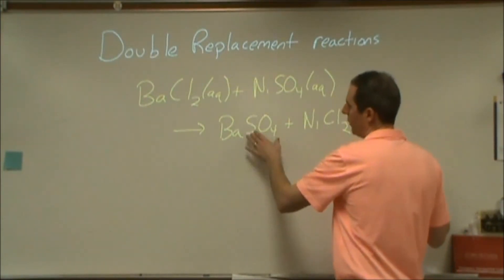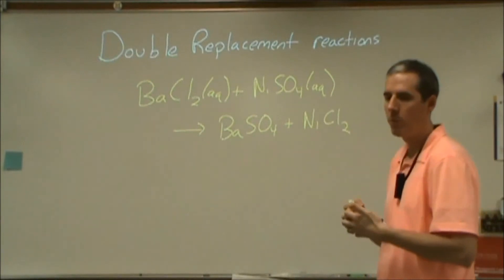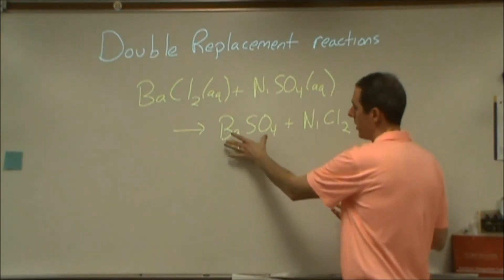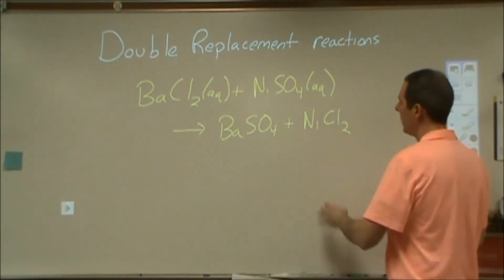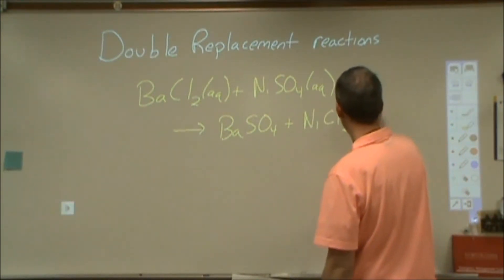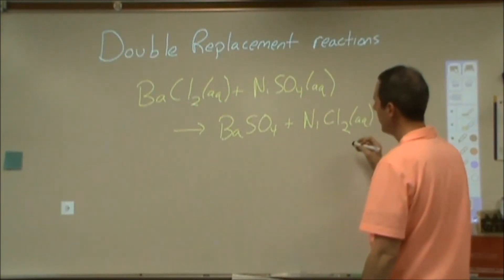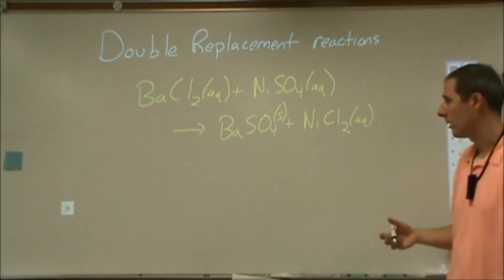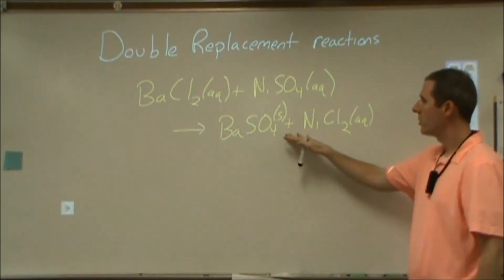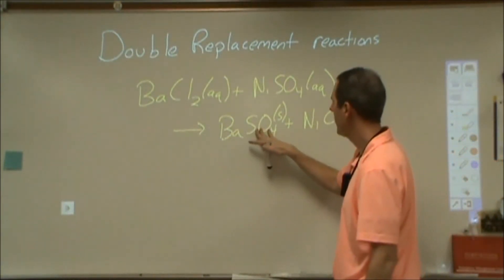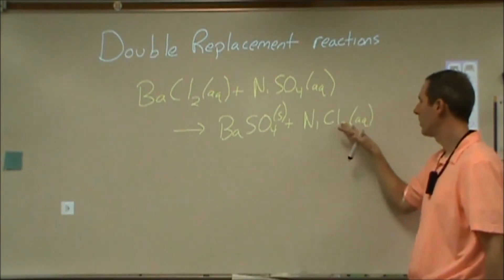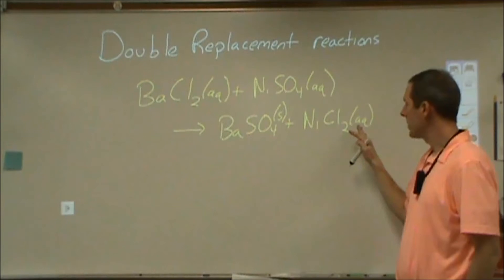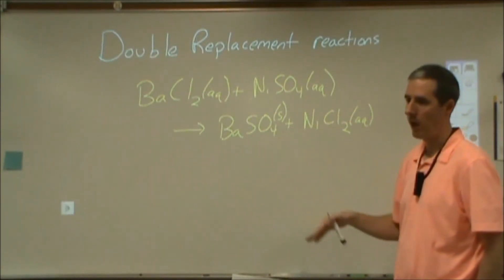But when I put the barium with the sulfate, those two form something that's not going to dissolve in water. It's called a precipitate, or basically it's a salt that doesn't dissolve in water. And then the nickel chloride will dissolve in water. So you're going to have some means to make a prediction about whether or not this will be soluble in water. Some kind of solubility guidelines. And if it's soluble, you're going to put aqueous because it will dissolve. If it won't dissolve, you'll put a solid.